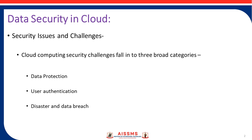The third category is Disaster and Data Breach, which involves Contingency Planning. With cloud services serving as a single centralized repository for a company's mission-critical data, the risk of having that data compromised due to a data breach or temporarily made unavailable due to a natural disaster are real concerns.